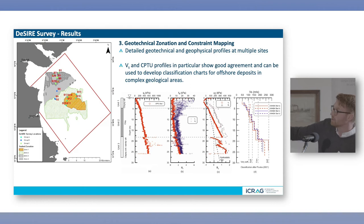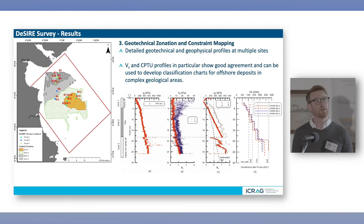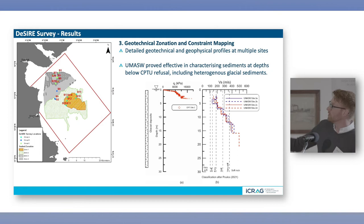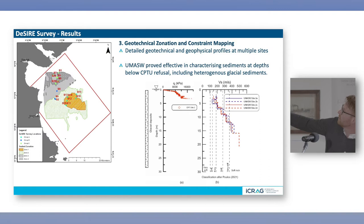For each location we have a profile whereby three profiles A, B and C are from CPT and the final one is our VS. We get very good complementary data between the two. Of particular interest is that in the upper five metre layer we get very low cone resistance values and negative pore pressure values — very soft sediments — which has implications for cable trenching and cable installation. In the northwest where we have very shallow glacial deposits, CPT refusal was met at just under five metres, but from the VS profile we can get a characterising profile down to about 15 or 20 metres.